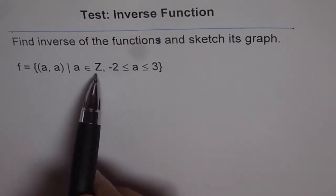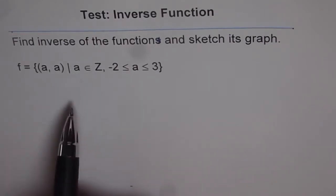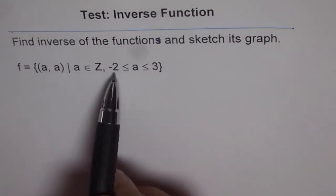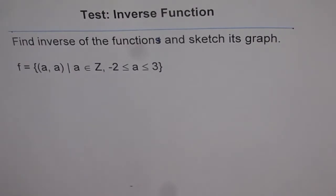a belongs to a set of integers and a is greater than or equal to -2 and less than or equal to 3. So that is the set of points which we have.